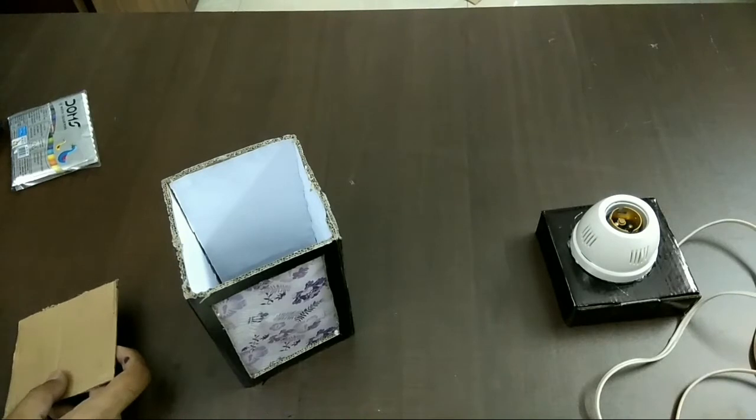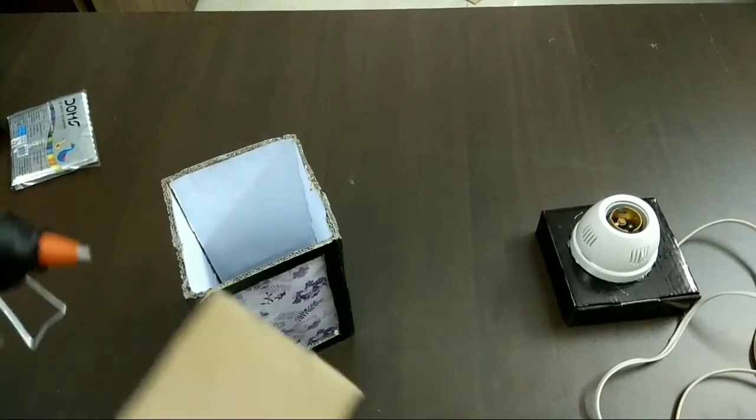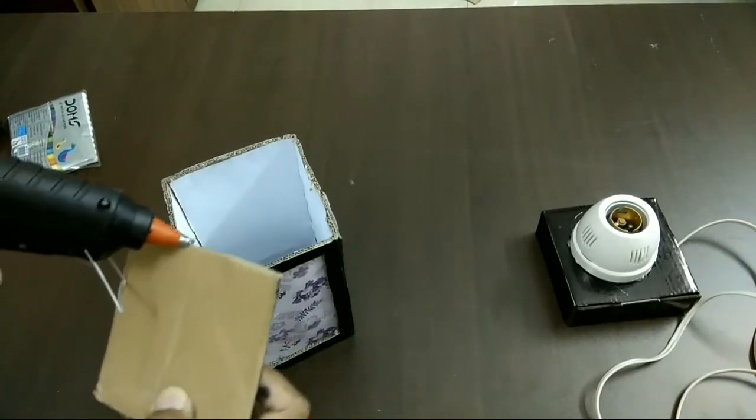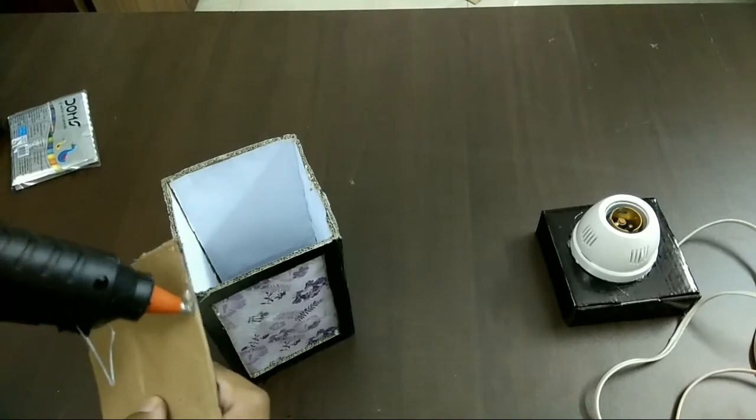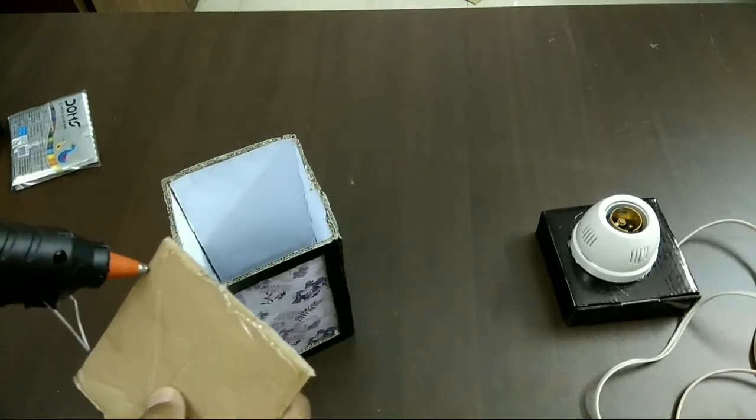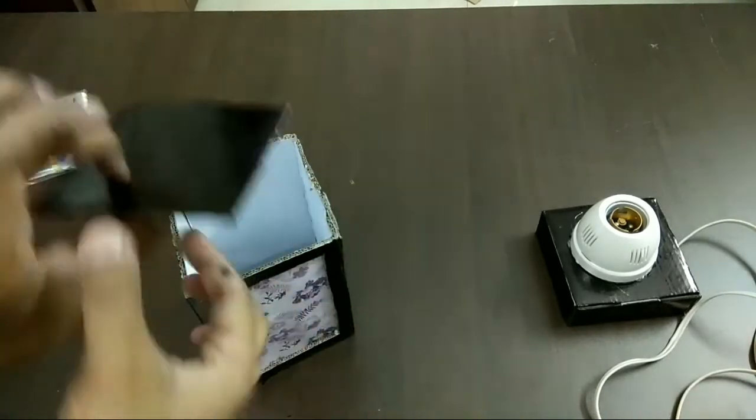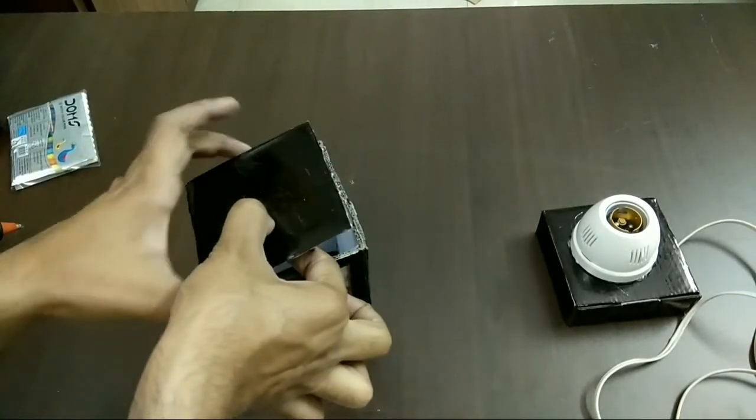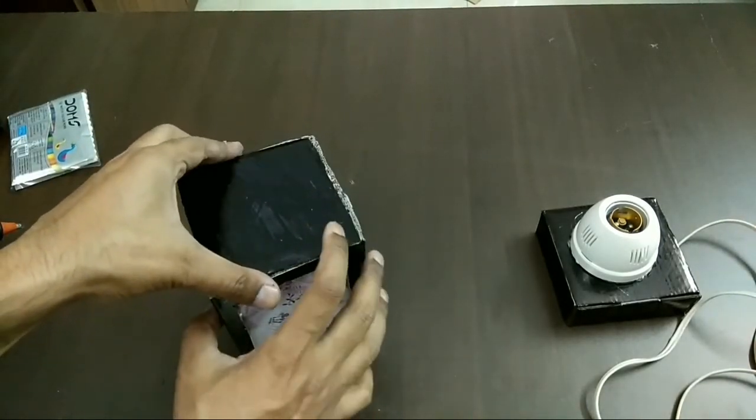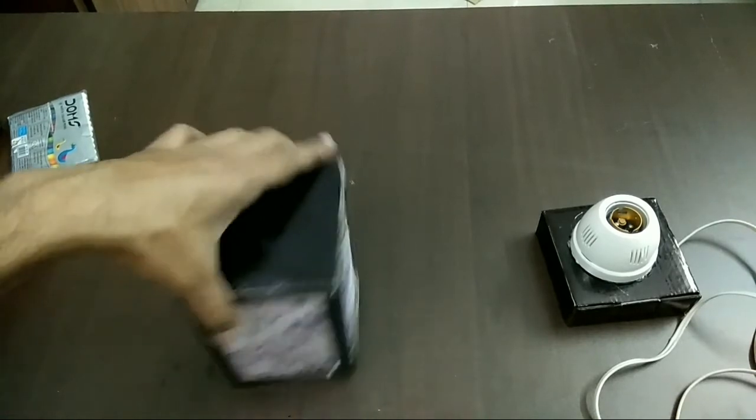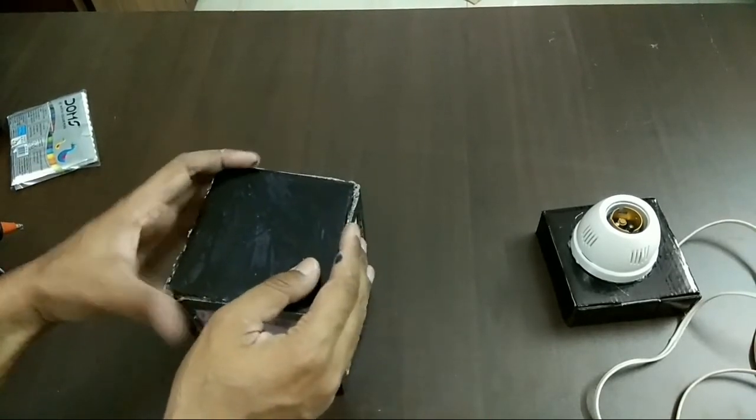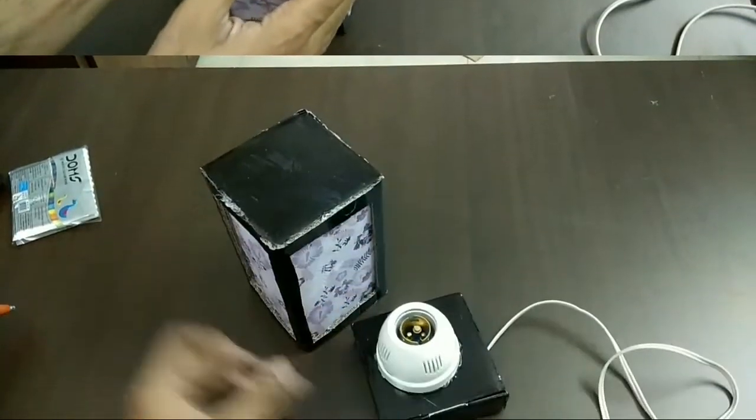Now the top part, you can use hot glue also. I have used hot glue but you can use fevicol also. You just make sure that the top part is fixed properly. Either you use hot glue or fevicol, it doesn't matter but it should set properly. And the remaining part which you are seeing, the cardboard part, you just paint them with the black marker.